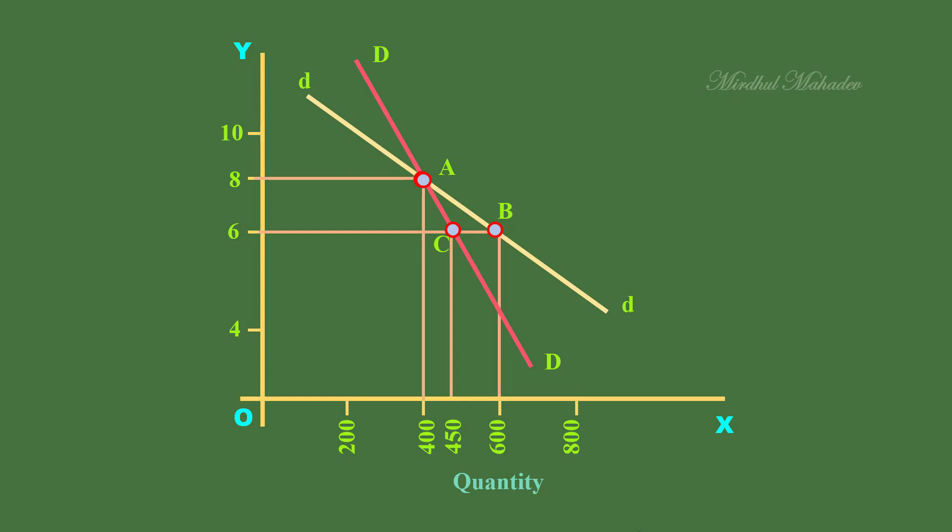But at this price, the market is willing to take only 450 units from each firm and not 600 units. Unable to sell 600 units, each firm moves to point C on the proportional demand curve. Each firm sells only 450 units.